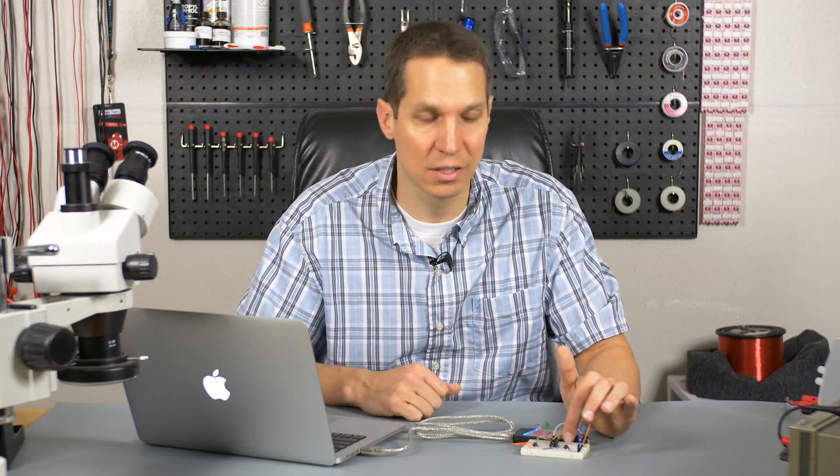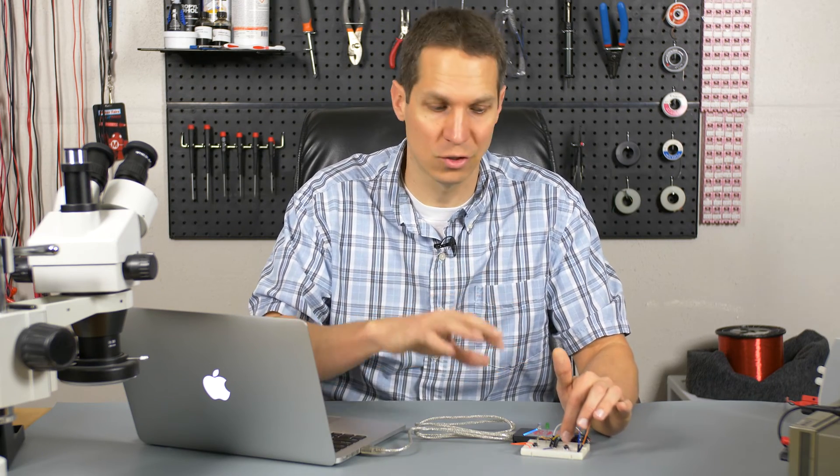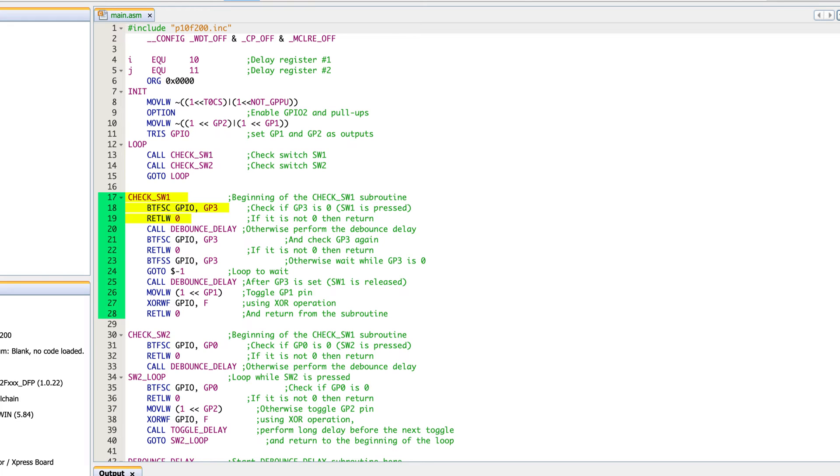Right now the way we have the setup, it's set up so it is a pull-up register. So it should be high except for when we push the button and basically attach that GPIO to ground and pull it low. So this checks and sees, hey, it's high, that means we haven't pushed the button, so I'm not going to skip it. So jump back up into the main loop. However, if you do push the button and it drops low, it'll say, hey, it's low. Skip that command, that return literal to W. So I don't go back into the main loop. And then I go to the debounce delay.